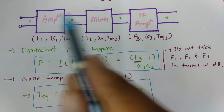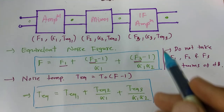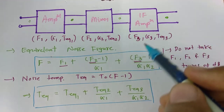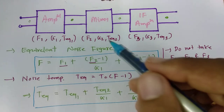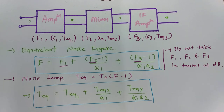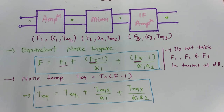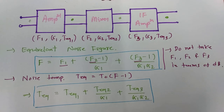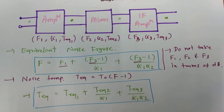These are the essential things to focus on when calculating equivalent noise temperature and equivalent noise figure for a cascaded communication system. In the next session, I will explain examples based on noise calculation in communication systems, which will give you a clear idea of how to work through these calculations. Thank you so much for watching.